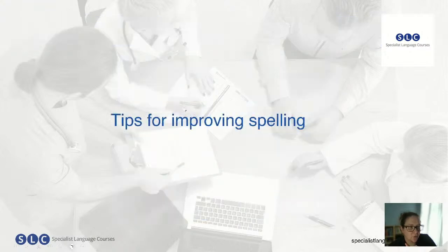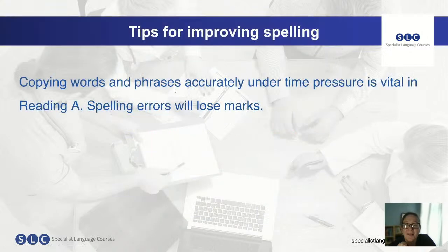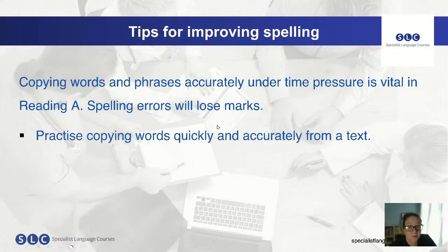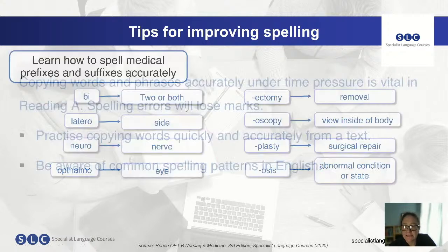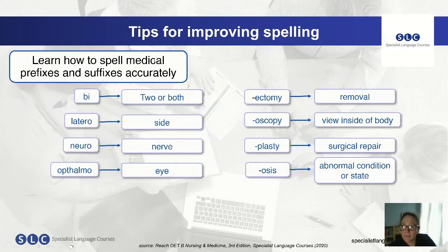What can you do to improve? Copying words accurately under time pressure is vital in reading A — spelling errors will lose marks. Practice copying words quickly and accurately from a text. Be aware of common spelling patterns in English. Check out medical prefixes and suffixes — for example, bi- means two, lateral means on the side, neuro-, optimo- — know how to spell those prefixes and suffixes.